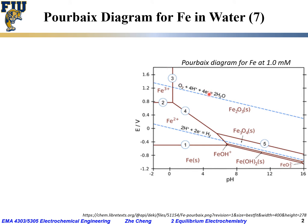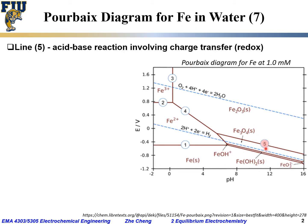One last example for the Pourbaix diagram: Line 5. Line 5 is also an acid-base reaction that involves charge transfer or redox. As you can see, Line 5 separates Fe₂O₃ solid from Fe₃O₄ — both are solid iron oxides.